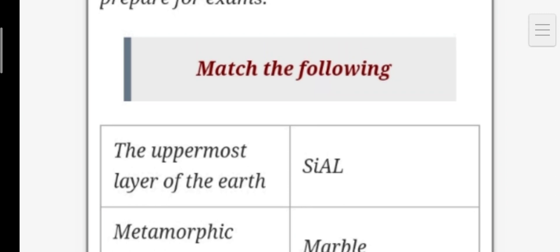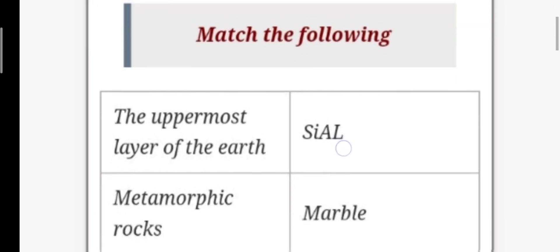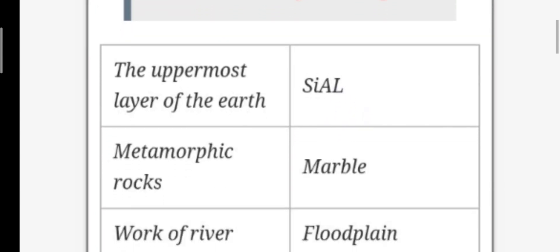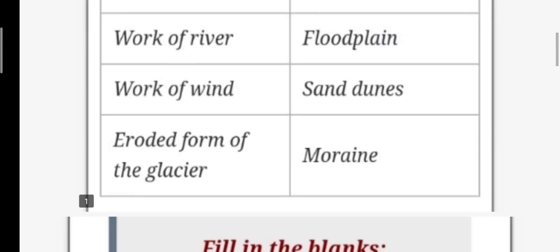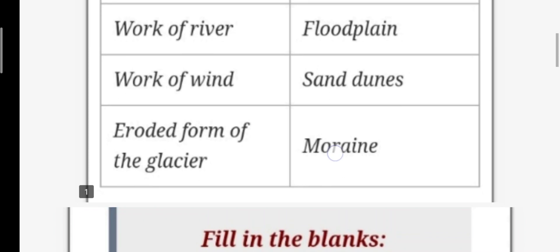Let's see here. First question is match the following. We have to match these. See, directly we have written the answers. The uppermost layer of the earth: sial. Metamorphic rocks: answer is marble. Work of river: flood plain. Work of wind: sand dunes. Eroded form of the glaciers: moraine. Match up is finished here.